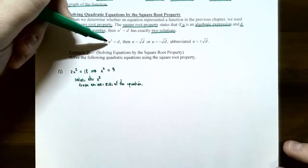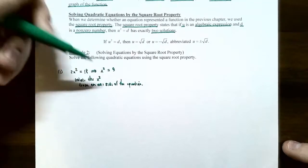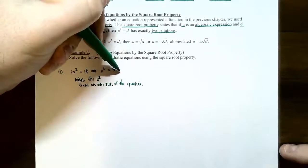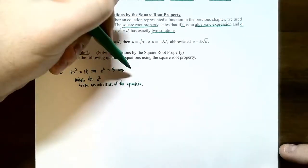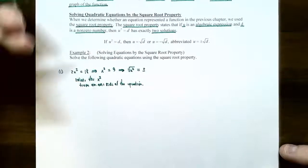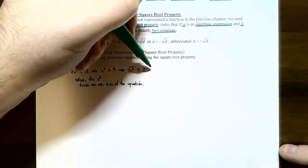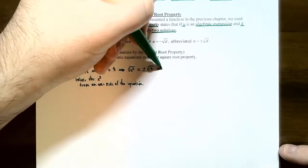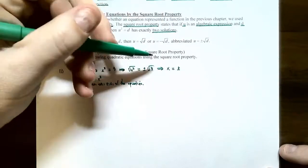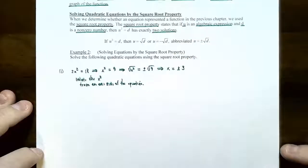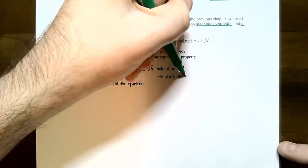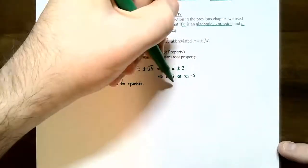Now it's in the form where you can use the square root property — one side is x being squared, and the other side is a non-zero number, 9. Take the square root on both sides: the square root of x squared equals plus or minus the square root of 9. Keep in mind that whenever you take the square root, you need to put the plus or minus in yourself so that you get two solutions. The square root cancels the square power, giving x equals plus or minus the square root of 9, which simplifies to plus or minus 3 — so x equals 3 or x equals negative 3.